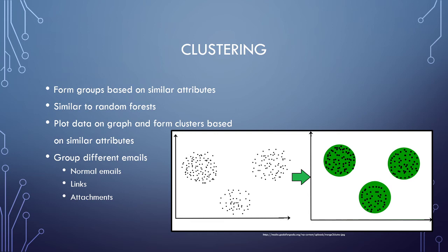And the final algorithm that I looked at was clustering. Clustering involves plotting your data on a graph and forming groups based on similar attributes or characteristics. It is similar to random forest in the way that you are creating different groups. Random forest, you're having groups of decision trees, whereas clustering, you're having groups of data points.